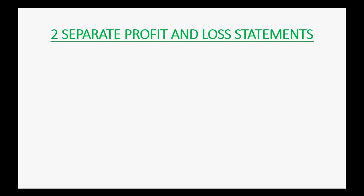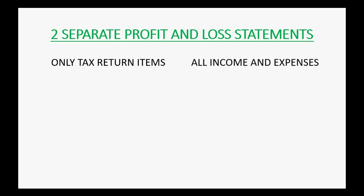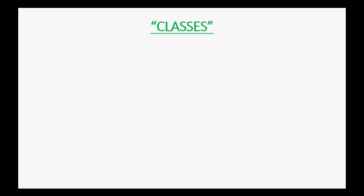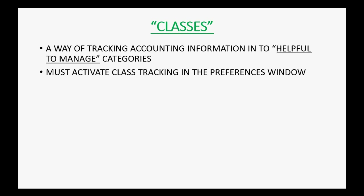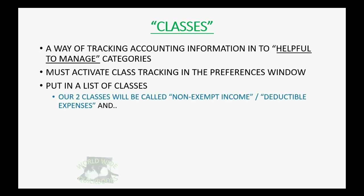You need two separate profit and loss statements: one that has only the items includable on the tax return, and another income statement that includes everything — all income and expense items. To accomplish this in QuickBooks, you create what are called classes. Classes are a way of tracking accounting categories. You must activate class tracking in the Preferences window, then put in the list of classes you will use. Our two classes will be called non-exempt/deductible and exempt/non-deductible.